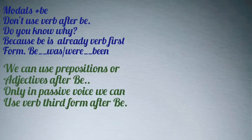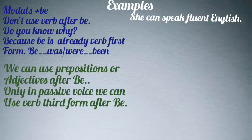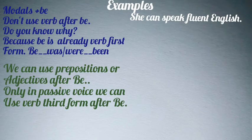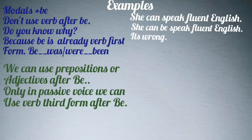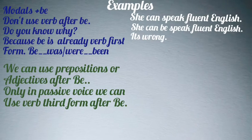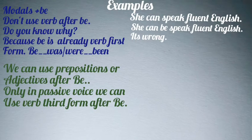After modals like can, should, could, would, has to, have to, must — we use base form. For example, 'she can speak fluent English' is correct. But 'she can be speak fluent English' is wrong, because after 'be' we are adding another verb in base form. So whenever you use 'be' after a modal, do not use another verb after it.